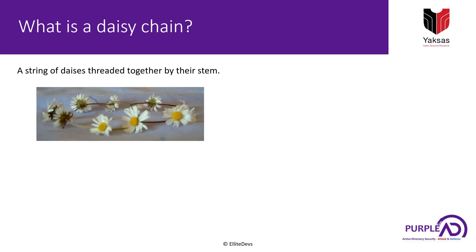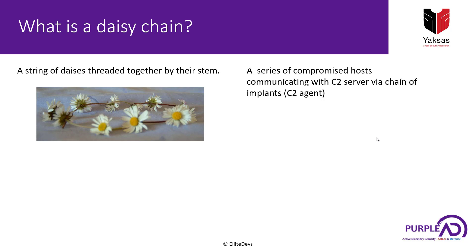So what is a daisy chain? In very simple terms it's a sequence of connected daisies. Now if we take this concept and apply it to the cybersecurity field, we get a series of compromised hosts communicating with a command and control server via a chain of implants or command and control agents.